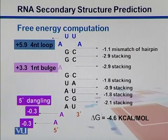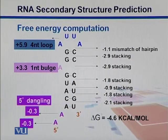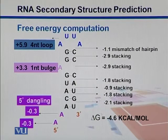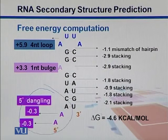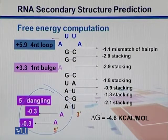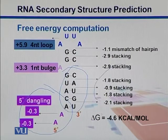Here we see a structure and its overall free energy computations. Some structures like loops and bulges create less stability since their energy is a large positive number. Similarly, extensions going out like 5-prime dangling ends have energy equal to minus 0.3. We are looking for arrangements whose energy is less. More stacked pairs means lower energy of the system, so stacks are good.